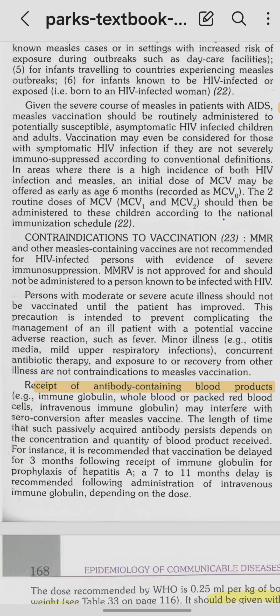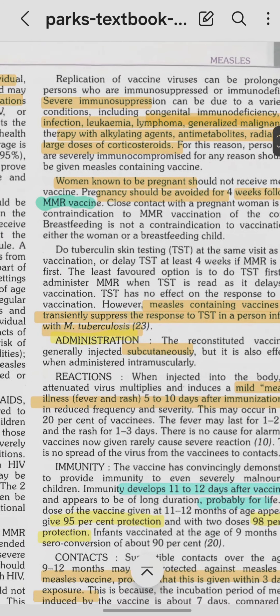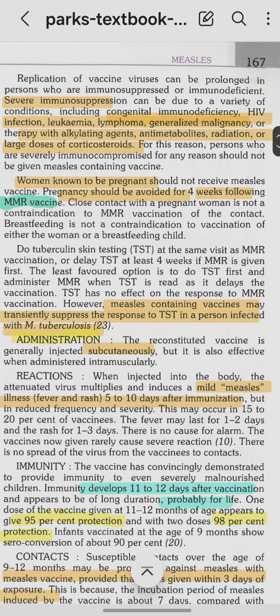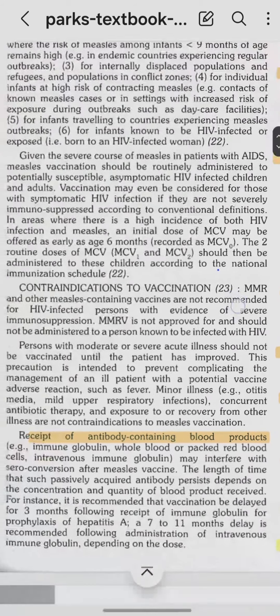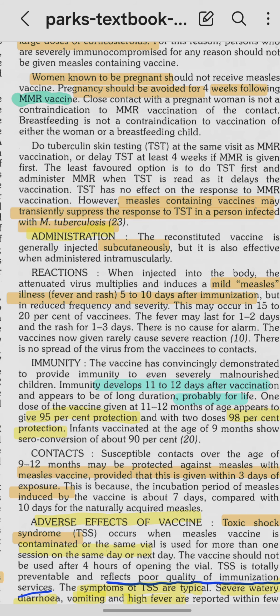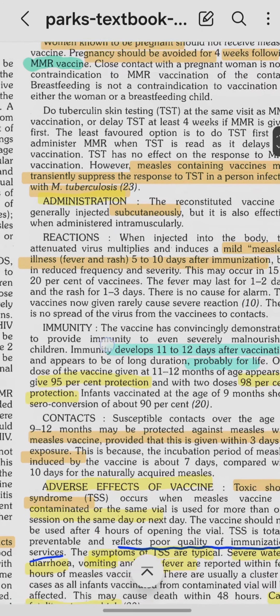Severe immunocompromised states that contraindicate vaccination include HIV infection, leukemia, lymphoma, generalized malignancy, therapy with alkylating agents, anti-metabolites, radiation, or large doses of corticosteroids. Severe immunosuppression, pregnancy, receipt of antibody-containing blood products, and severe acute illness are all contraindications.